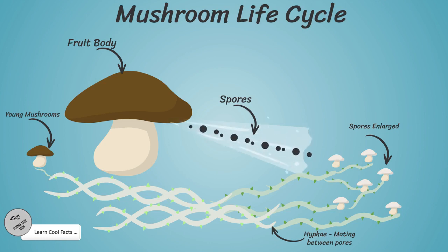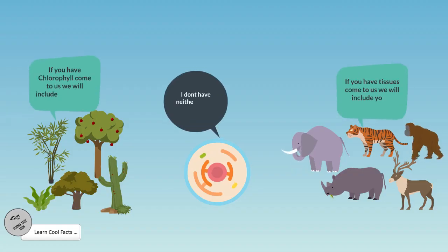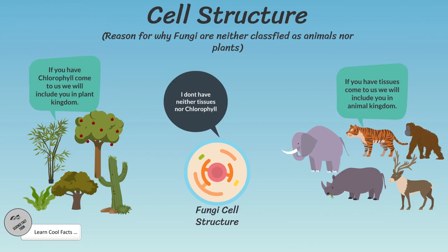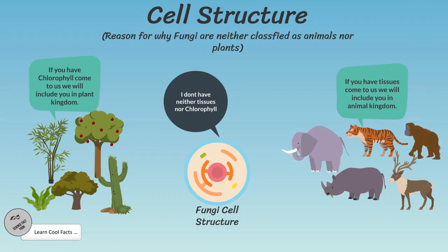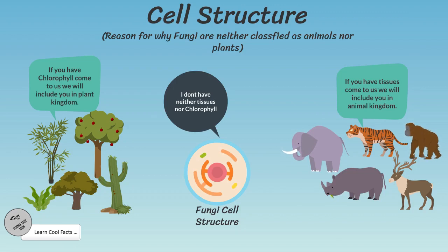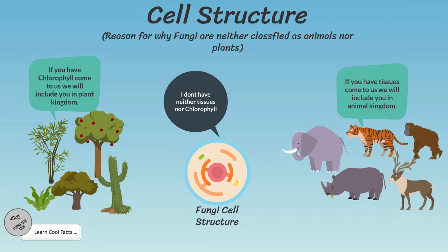Step 4: from the hyphae, the stalk and cap expand to produce new mushrooms. Fungi cell structure. Fungi cells are made of one or many eukaryotic cells, meaning their genetic material is surrounded by a membrane and they do not contain chlorophyll. Remember, chlorophyll is the green pigment in plants used to produce their own food through photosynthesis. Fungi cells are not grouped together to form tissues like animals and plants; instead they form hyphae. That's why they are neither animals nor plants.